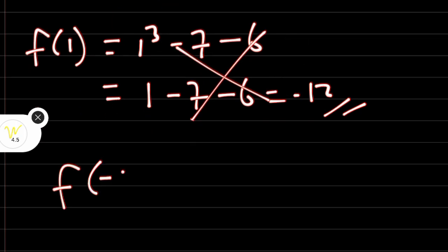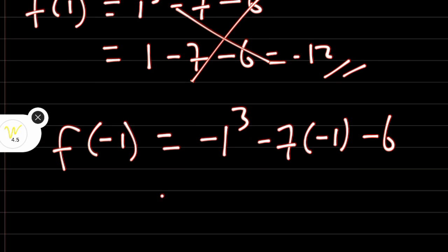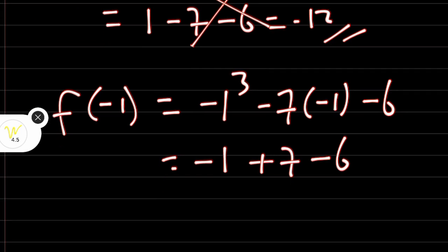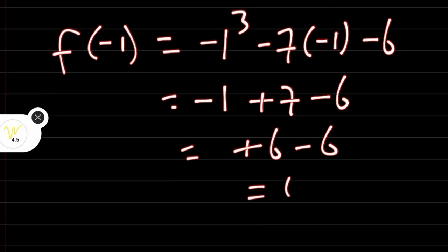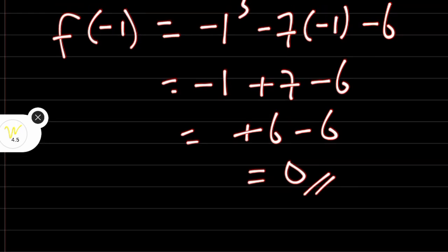Let's try f of minus 1. f of minus 1 is going to be equal to minus 1 raised to power 3, then minus 7 times bracket minus 1, then minus 6. Minus 1 cubed is minus 1. Minus 7 times minus 1 is plus 7, then minus 6. This is going to be minus 1 plus 7 is plus 6, minus 6 equals 0. Minus 1 is a root — it is one of the values that satisfy the equation.